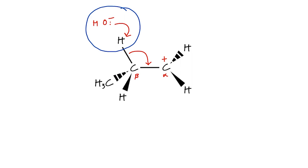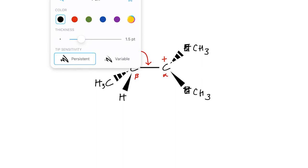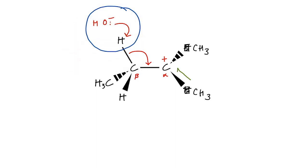The more stable the carbocation intermediate, the faster the rate of the reaction. The easiest way to stabilize the carbocation is to replace hydrogens with alkyl groups — for example, methyl groups — because alkyl groups are electron-donating, pushing electron density towards the positive carbon and stabilizing the charge. Replacing hydrogens with alkyl groups turns a primary haloalkane into a tertiary haloalkane, which is why tertiary haloalkanes react fast and readily via the E1 mechanism.